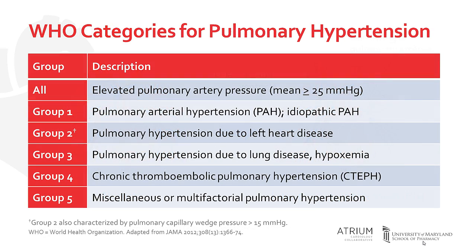The World Health Organization, or WHO, categorizes pulmonary hypertension into five groups, all of which are characterized by an elevation in mean pulmonary artery pressure. However, the underlying pathophysiology for each of these groups is a little bit different.